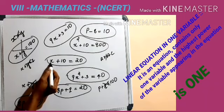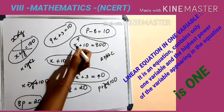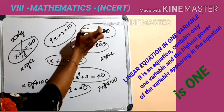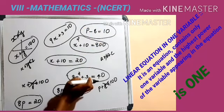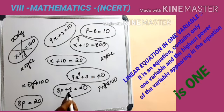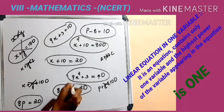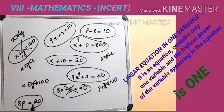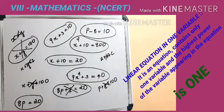Here also we can see only one variable. Here also only one variable, that is x. Here we can see two variables, p and q, so it is not an equation in one variable. What about here? Yes, only one variable.